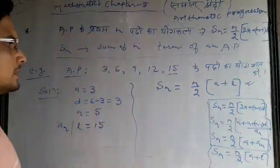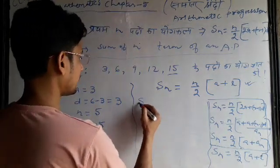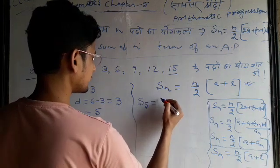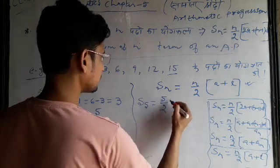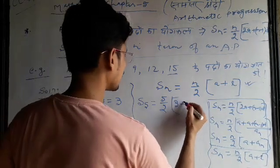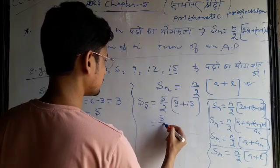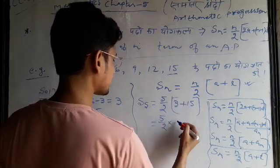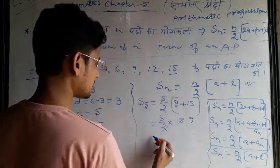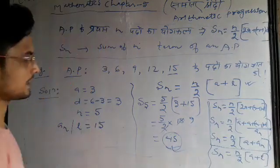The calculation becomes easier. n is 5, l is 15. So Sn equals 5 by 2 into a plus l, which is 15 plus 3 equals 18. 9 into 5 equals 45. So our answer is 45.